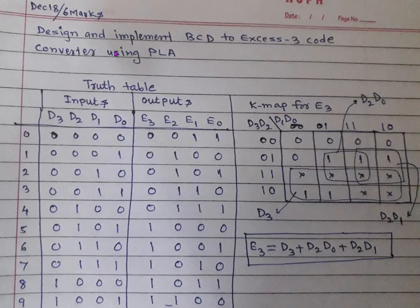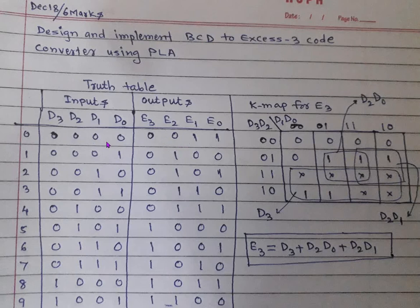For this example, first of all we have to prepare the truth table for BCD to XS3. The inputs are BCD — that means four inputs — and the outputs are also four bits for XS3. We take valid BCD inputs from 0000 (0) to 1001 (9). The corresponding XS3 outputs are obtained by adding 3 to each input. For example, 0 plus 3 gives 3, so 0000 becomes 0011. Similarly, for 9 (1001) it should be 12, which is 1100.